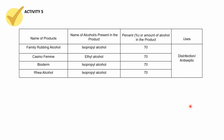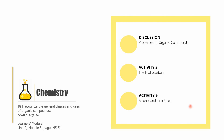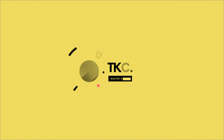We're done with Activity number 5, uses of common alcohols. In this session, you were able to engage in the discussion about the properties of organic compounds, Activity number 3 on hydrocarbons, and Activity number 5 on alcohols and their uses. This is Grade 9 Chemistry and we're still working on mastering this learning competency. This is Sir Carlos, and I hope to see you in the next video. Have a good day.